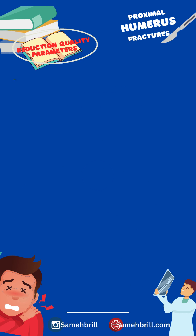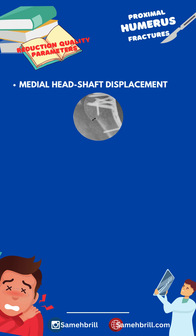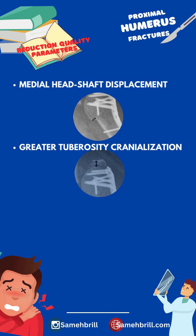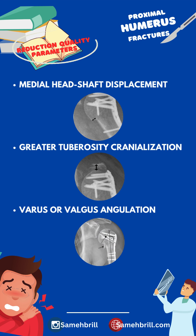Number one: medial head shaft displacement. Number two: greater tuberosity cranialization. And number three: varus and valgus angulation.